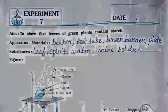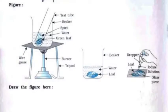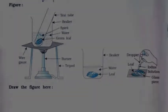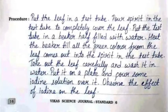You need to draw the same figure just below where the space is given. The procedure is: put the leaf in a test tube, pour spirit in the test tube to completely cover the leaf, then put the test tube in a beaker half filled with water, and heat the beaker till all the green color from the leaf comes out into the spirit in the test tube.